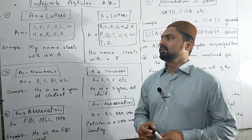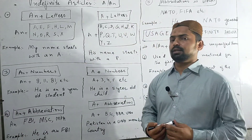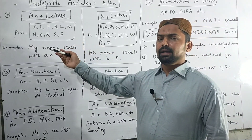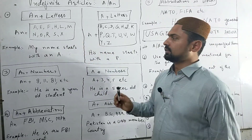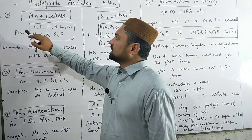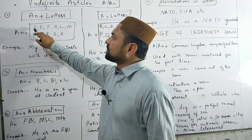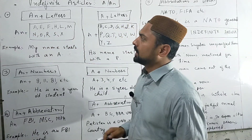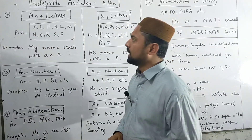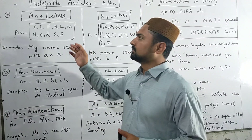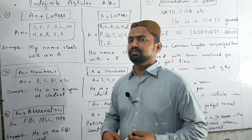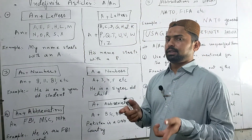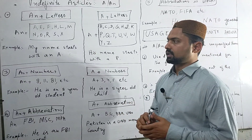If the word starts with a vowel sound, then AN will be used. The letters that have a vowel sound are: A, E, F, H, L, M, N, O, R, S, X.